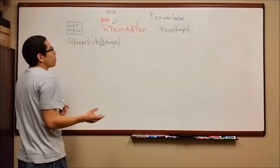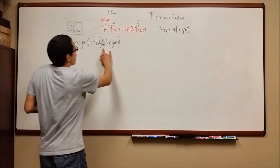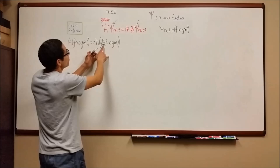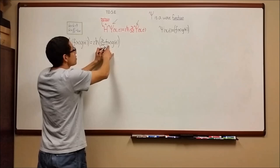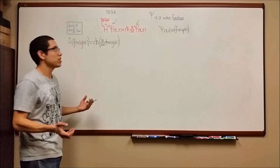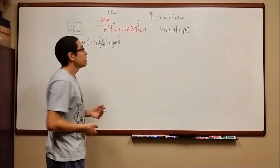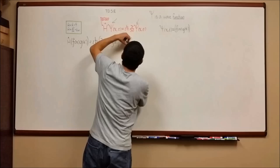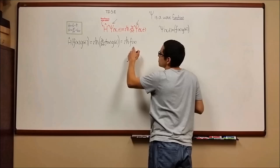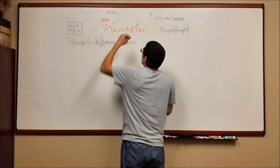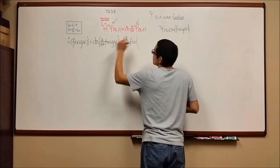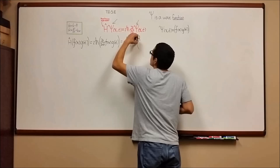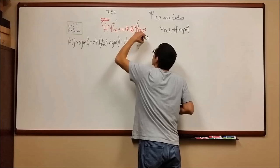One of the benefits of using this technique is that when we take a partial derivative of these two functions with respect to time, if f of x doesn't depend on time, its rate of change with respect to time is zero — it's essentially a constant. So this side can be rewritten by pulling f of x out, and the partial derivative becomes a regular derivative since g of t depends only on t.